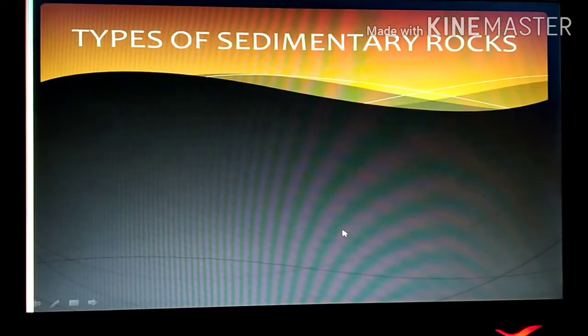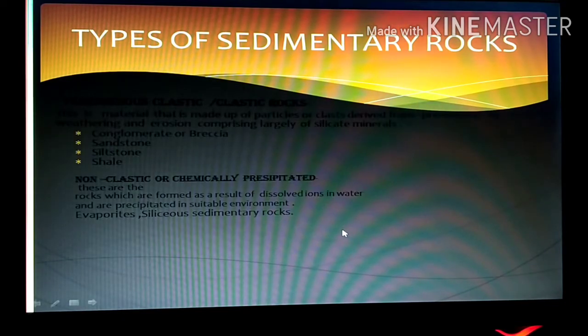Now we will come on the types of sedimentary rocks. First is terrigenous clastic which is also known as clastic rock. This is a material that is made up of particles or clast derived from pre-existing rock by weathering and erosion comprising largely of silicate minerals.